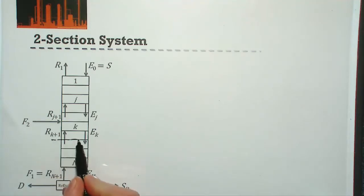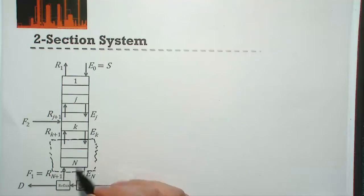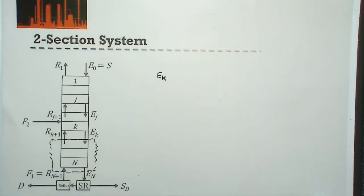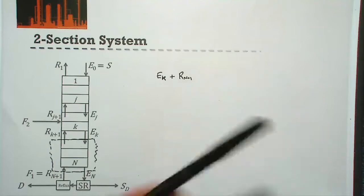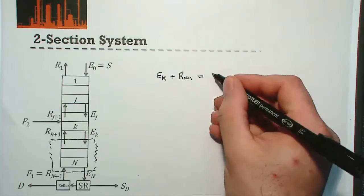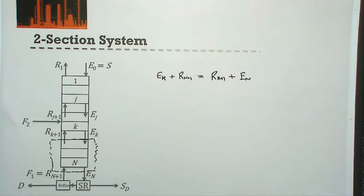The first thing we want to do is take a mass balance around the bottom of our column. If we define this area, we can simply say that the materials going in to this section is our extract from stage K plus our final raffinate R_{N+1}, and that must equal what comes out — our R_{K+1} and our extract at our final stage.